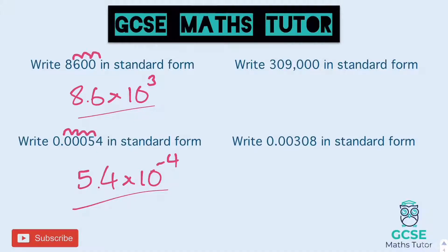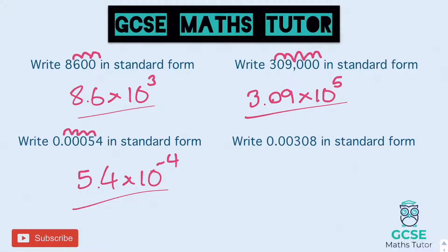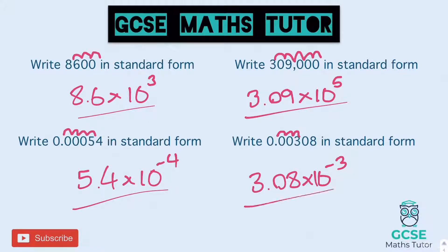309,000: 1, 2, 3, 4, 5 hops, so that's 3.09 times 10 to the power of 5. And the last one — again a nought point number, so negative power — 1, 2, 3, so negative 3, giving 3.08 times 10 to the power of negative 3.